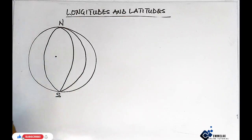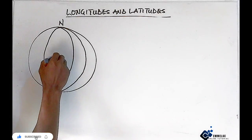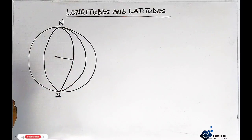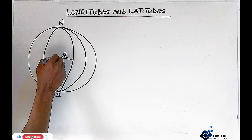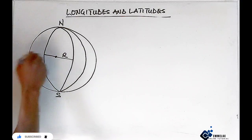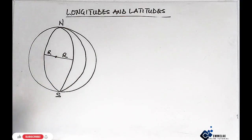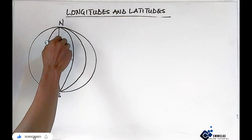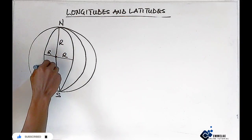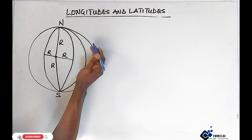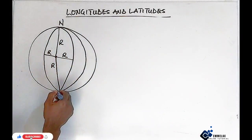Let's assume this is the center of the Earth. Any line drawn from the center to touch any of the longitude lines is a great radius R. Because this is the center of the circle, anywhere from the center to any part forms the great circle. So all these lines here are called the great circles. The lines are drawn from the North down to the South, as I said earlier.